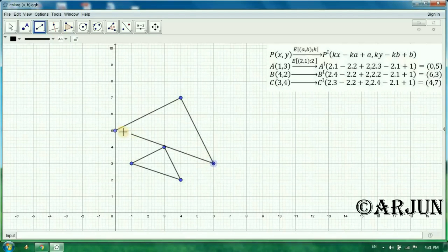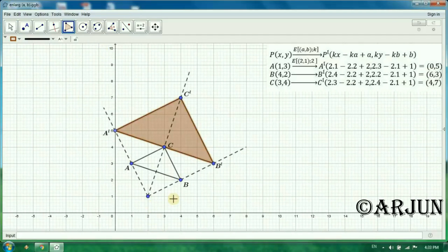This is your image triangle of this triangle ABC. Here center is (2,1). This is your center of enlargement. This is your object and this is image. Now set the image part and join by that line. Here is our figure.